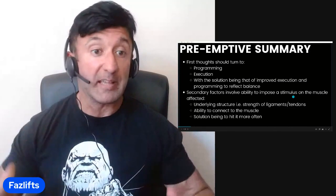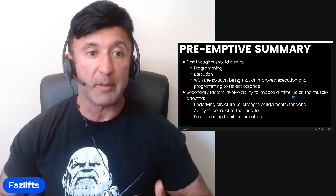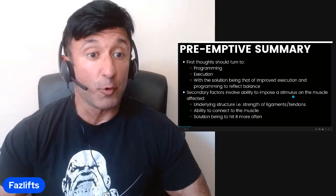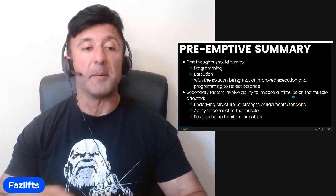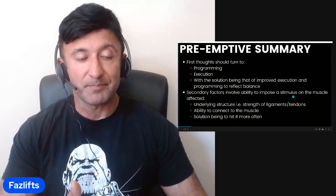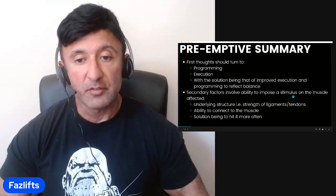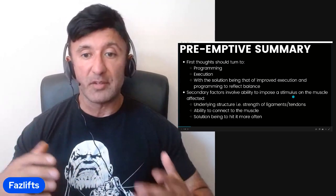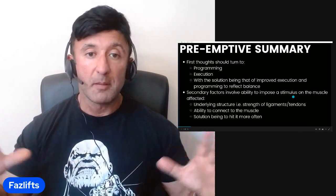So if you have a weak or lagging body part, your first thoughts should go towards programming — how are you programming for the area? Are you programming sufficient focus, sufficient volume, intensity, all that stuff? Second thing is execution: are you actually performing the exercises correctly? Are you picking the right exercises? The solution being to improve execution and balance your routine. Once you've accomplished that, secondary factors include more to do with the biology of you as a person — underlying structure primarily, so the strength and thickness of ligaments and tendons, and secondarily your ability to actually connect with that muscle. The solution there is to hit it more often.